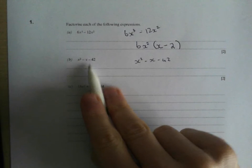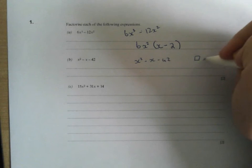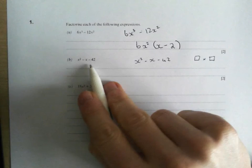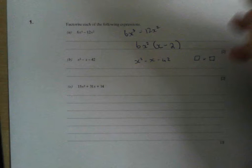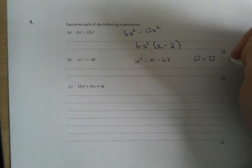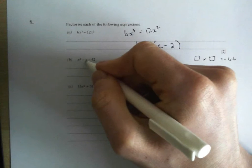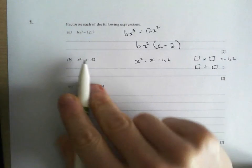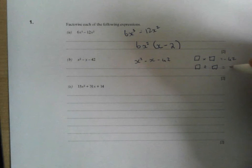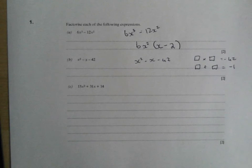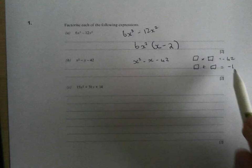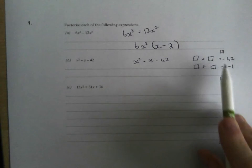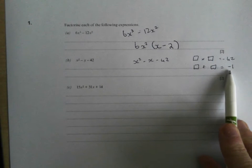I say we've got two numbers, and those two numbers I've got to multiply together to give minus 42. And when you add those two numbers, you've got to get the number of x's, which in this case, minus x is minus 1x. So I need two numbers that when I times them, I get minus 42. That tells me one's got to be positive and one's got to be negative. And when I add them together, I'm going to get negative 1.